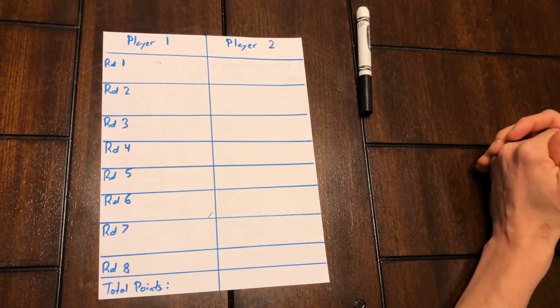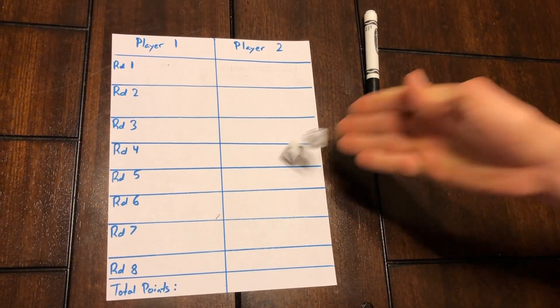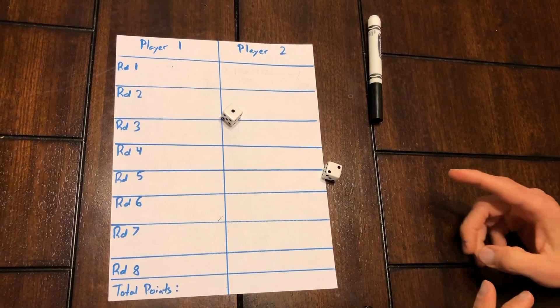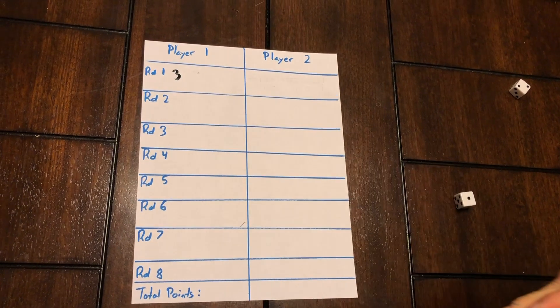I'm going to demonstrate player one here. I'm going to take my dice and roll, and I get a one and a two. So I'm going to add those together: one plus two makes three. So I'm going to put down under round one a score of three.